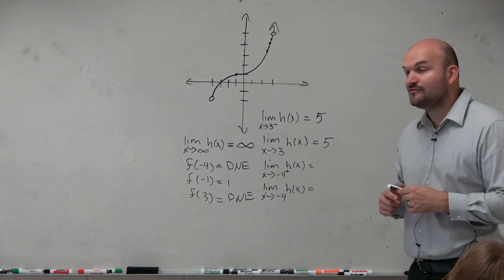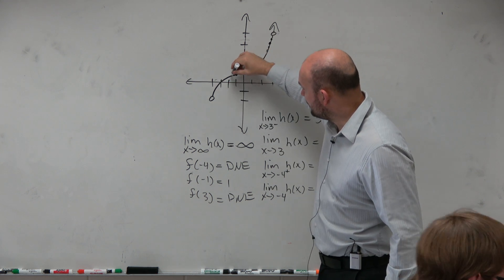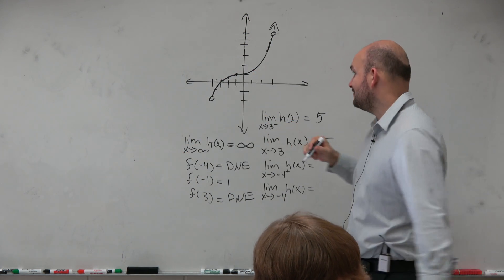So the next one would be negative 4 from the right. So you guys can see, here's negative 4. So coming in from the right, we're getting really, really close to what value? Negative 2.